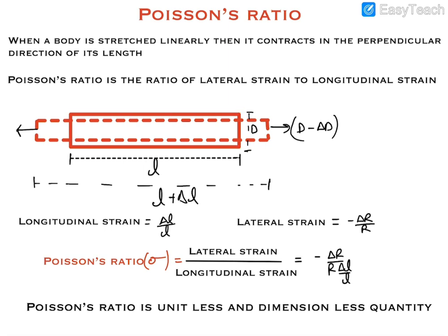When force is applied in one direction, two types of strains are developed. The first is longitudinal strain, which is the ratio of change in length along the direction of force to the original length. The lateral strain is the change in diameter of the wire divided by the original diameter, and it is called lateral because this change is perpendicular to the direction of force.